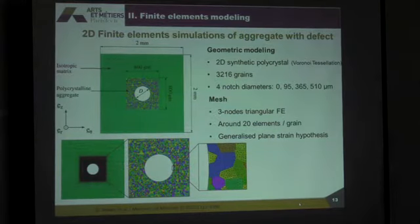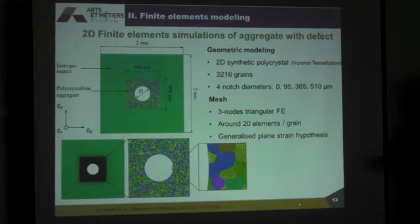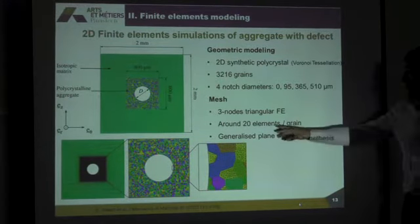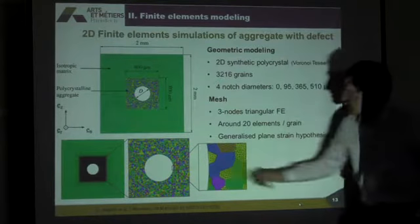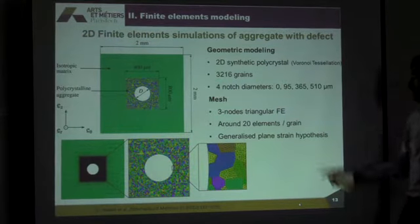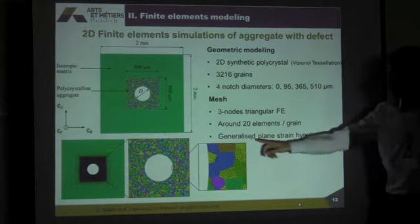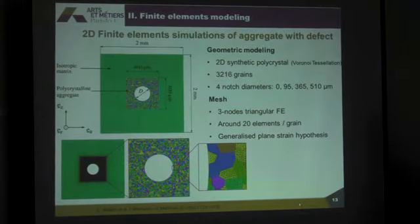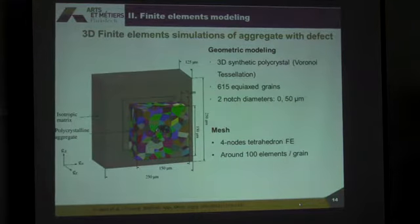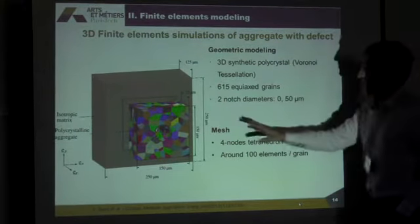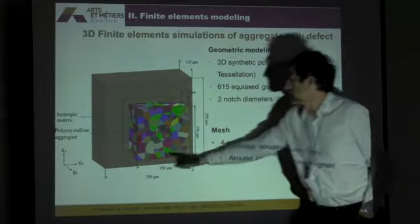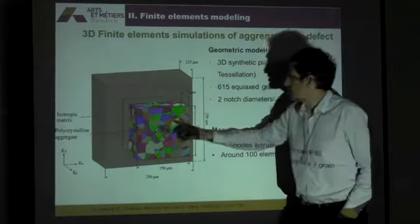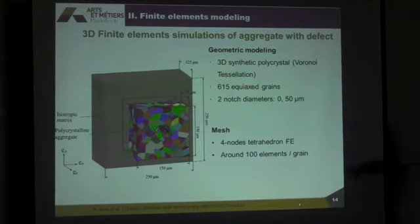For the 2D simulation, we have more than 3,000 grains. We introduce four notch diameters, and as you can see here on this zoom, around 20 elements per grain, and we use the hypothesis of generalized plane strain. We also use a 3D finite element simulation with, once again, a polycrystalline aggregate generated by Voronoi tessellation, embedded into an isotropic matrix.